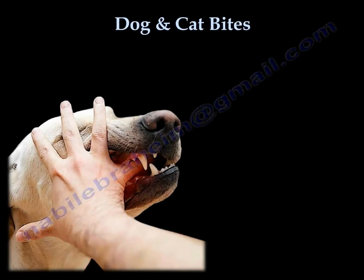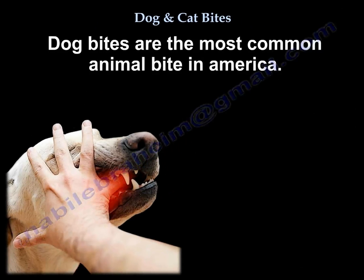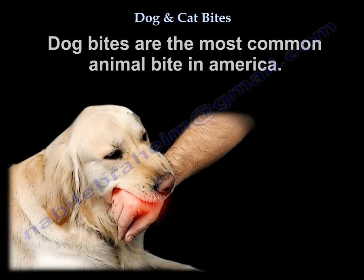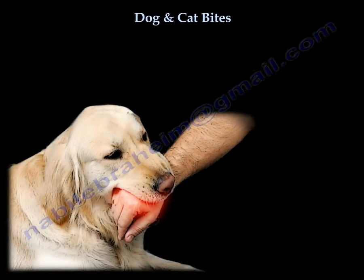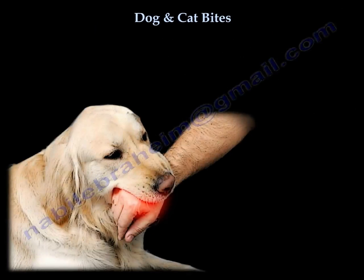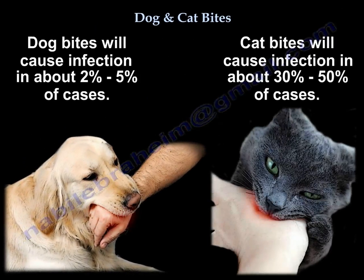Dog bite is the most common animal bite in America. The dog bite has a lower rate of infection than the cat bite. Dogs will give infection in about 2 to 5 percent, while cats will give infection in about 30 to 50 percent.